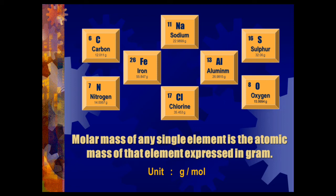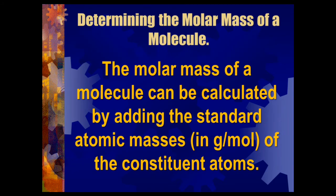We collect the mass from the periodic table and AMU is replaced with grams. Now, determining the molar mass of a molecule: the molar mass of a molecule can be calculated by adding the standard atomic masses in grams per mole of the constituent atoms.